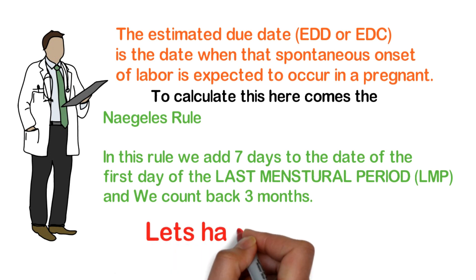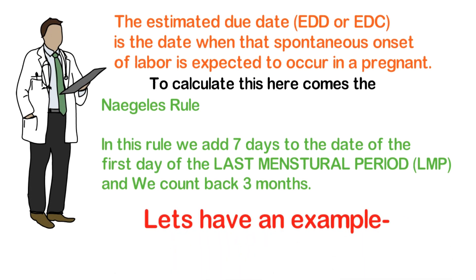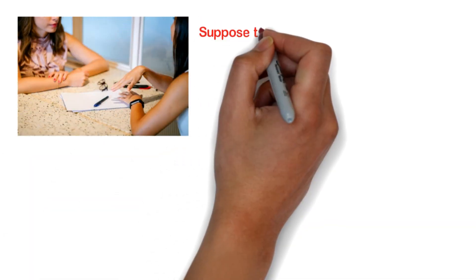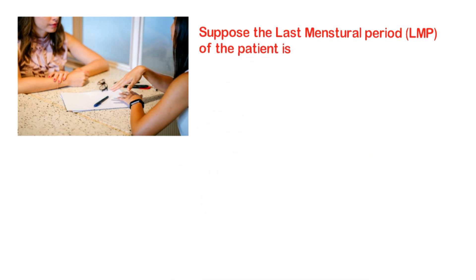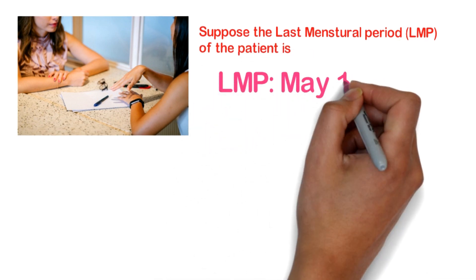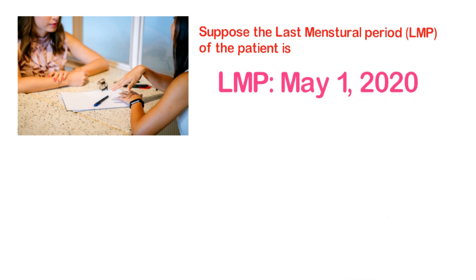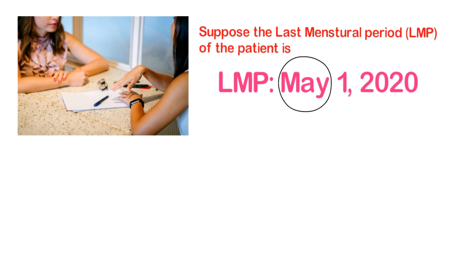Let's make it more clear with an example. Suppose the last menstrual period of the patient is May 1, 2020. Here, May corresponds to the 5th month of the year, while 1 corresponds to the day in the month.